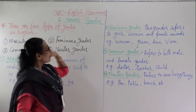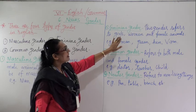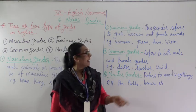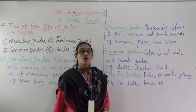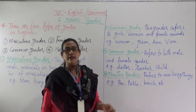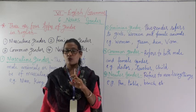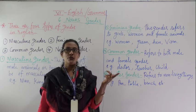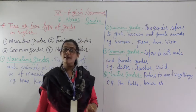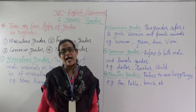The second one is Feminine Gender. Feminine Gender — this gender refers to girls, women, and female animals. Just as we said male and female: masculine and feminine. So this gender refers to girls, women, and female animals.